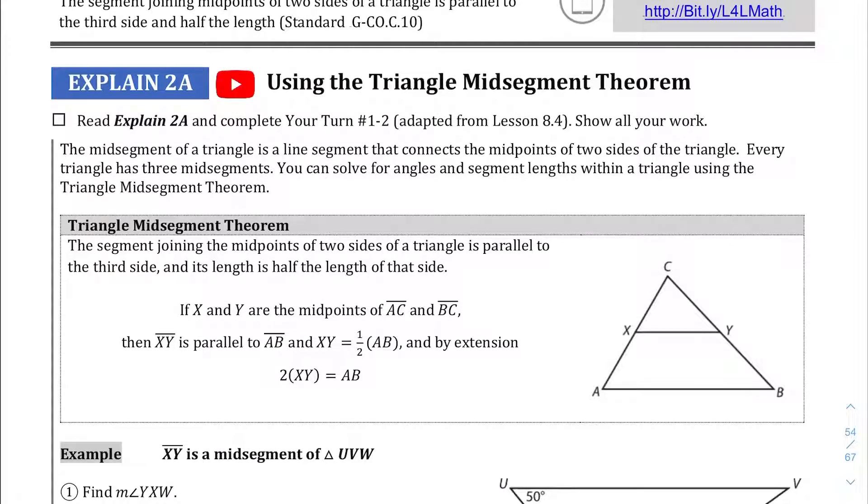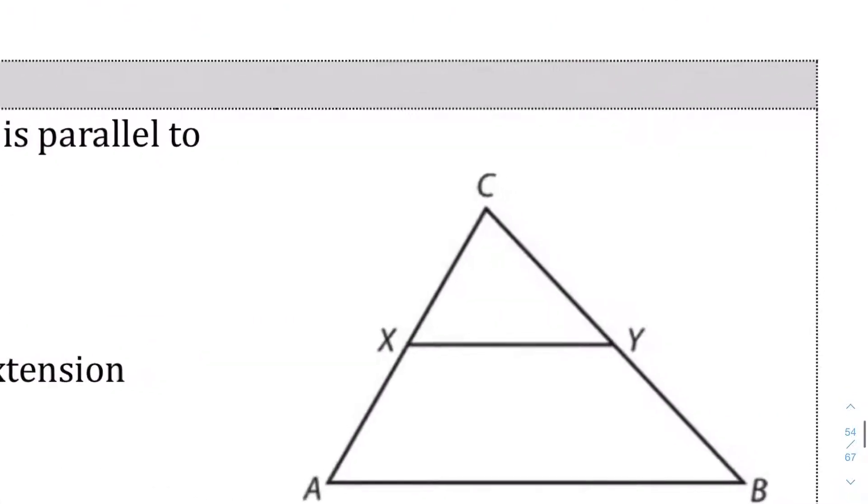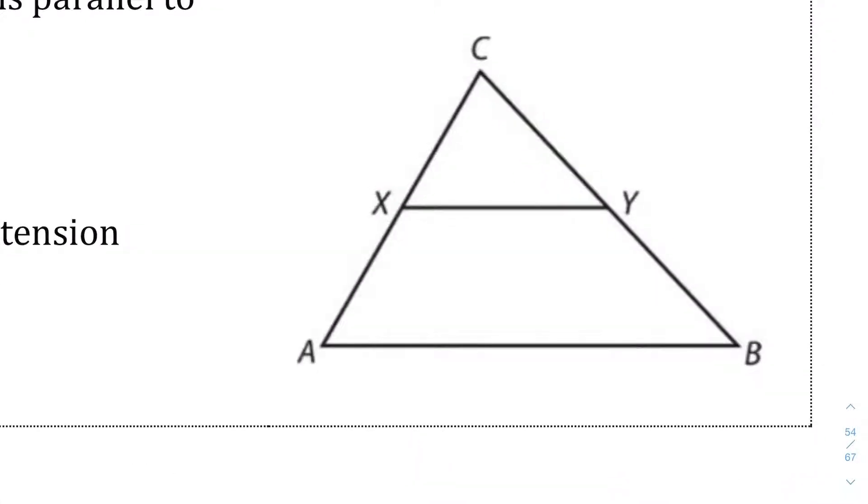We're using the triangle mid-segment theorem. If you take side CA, for example, and find the midpoint right there at X, and do the same thing for the other leg CB, and then find the midpoint which is right there at Y.